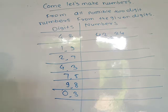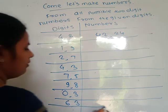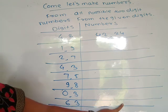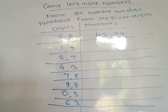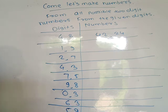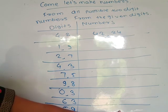Next, digits 6 and 3 — you write two numbers: 63 and 36. Then digits 5 and 9 — you write two numbers: 59 and 95.